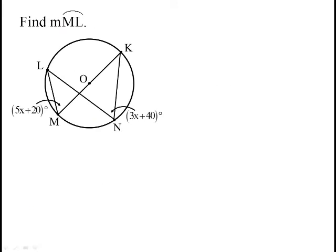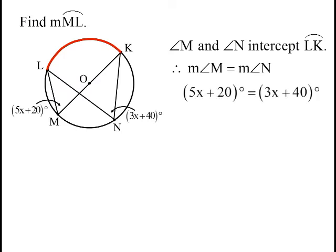Okay, so here's another one, similar but different. See if you can find the measure of arc ML. So we'll start by seeing that M and N, angle M and angle N, they both intersect the same arc LK. So that means they must be equal to each other. M and N, since they intercept the same arc, they have to be equal to each other. So that allows us to find what X is.